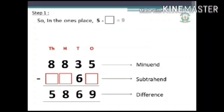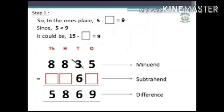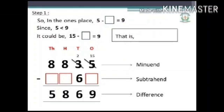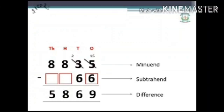Step 1: In the ones place, 5 minus dash is equal to 9. Since 5 is less than 9, it could be 15 minus dash is equal to 9 — that is, borrowing 10 ones from 3 tens, leaving 2 tens in the tens column. Therefore 15 minus 9 is equal to 6. Write 6 in the ones missing column.